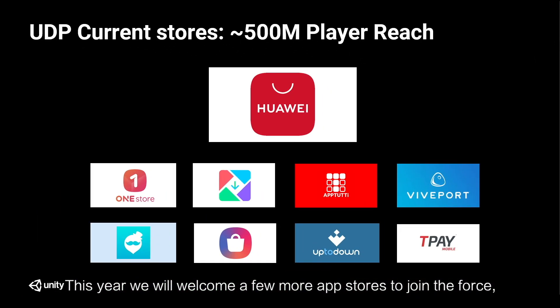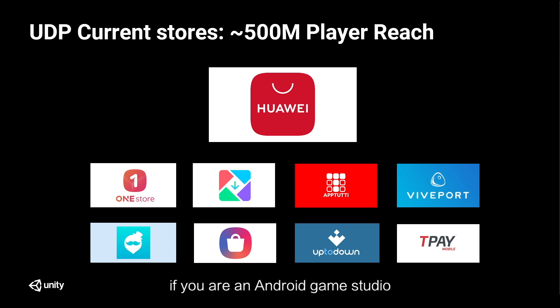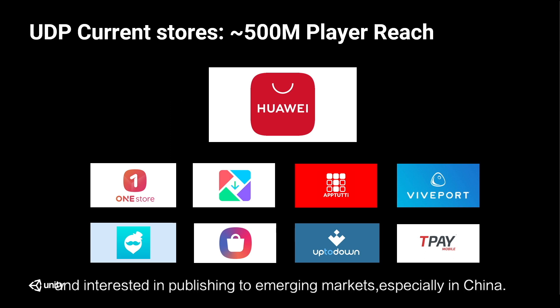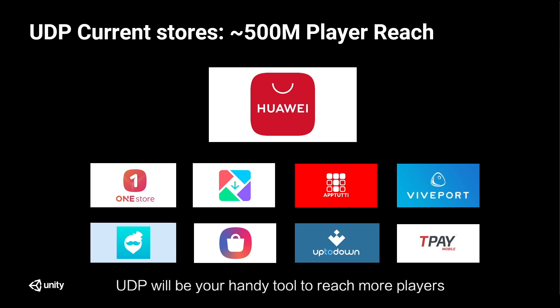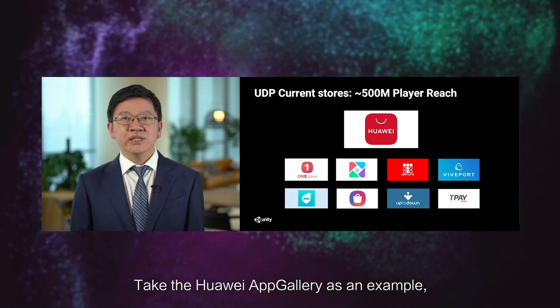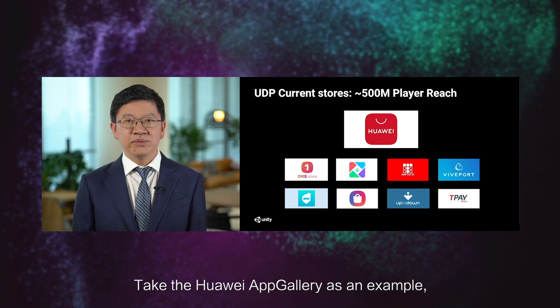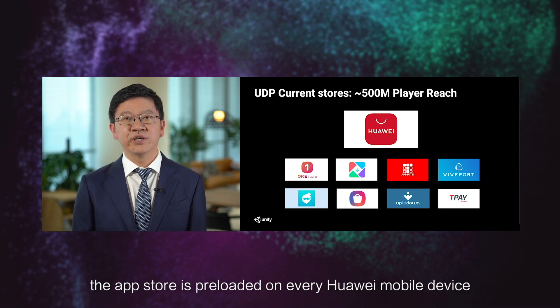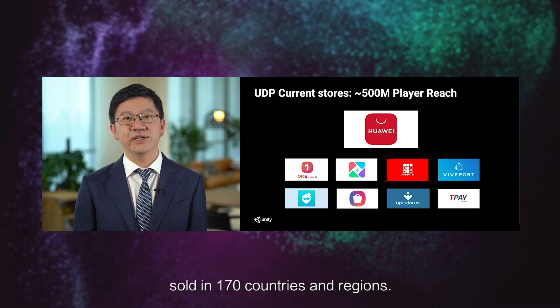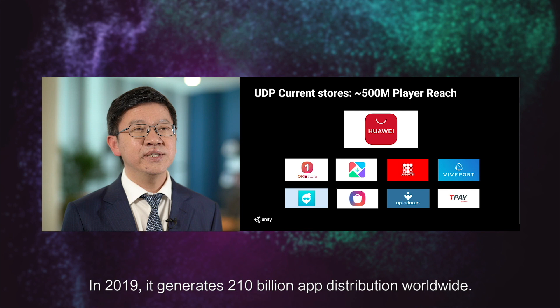This year, we will welcome a few more app stores to join the force. If you are an Android game studio interested in publishing to emerging markets, especially in China, UDP will be your handy tool to reach more players. Take the Huawei App Gallery as an example — the app store is preloaded on every Huawei mobile device sold in 170 countries and regions. In 2019, it generated 210 billion app distributions worldwide.